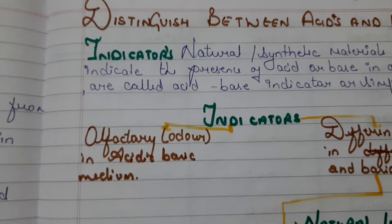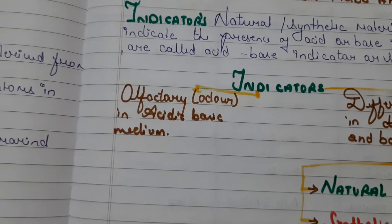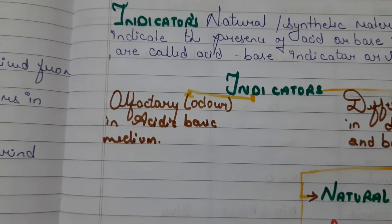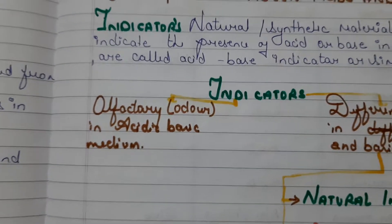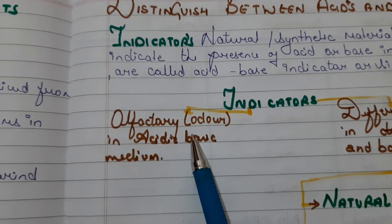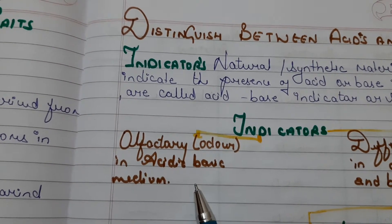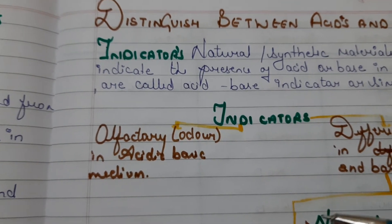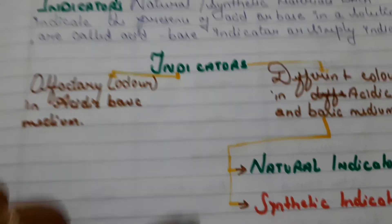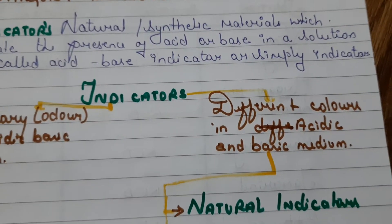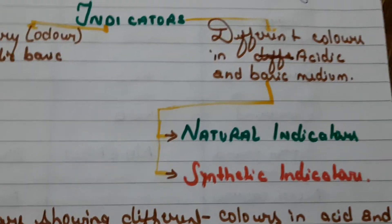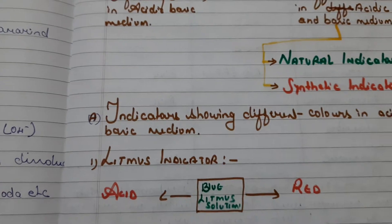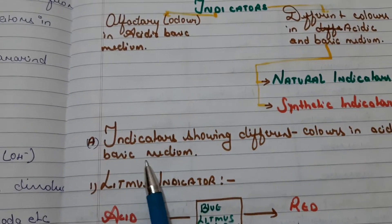Indicators can be divided into two categories. First, indicators showing different colors in acidic and basic mediums. Second, indicators giving different odors in acidic and basic mediums — these are known as olfactory indicators. Color-changing indicators can further be categorized into natural indicators and synthetic indicators.